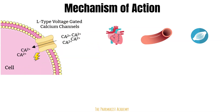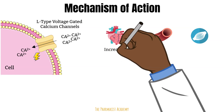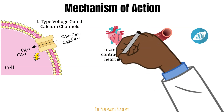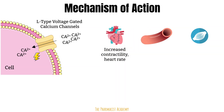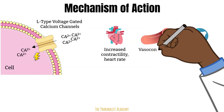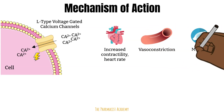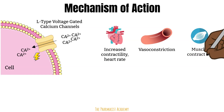The channel is normally closed, but when triggered by an action potential, it opens up and there is an influx of calcium into the cell. In the heart, calcium helps increase contractility and heart rate. In the smooth muscle of the blood vessel, it promotes vasoconstriction. And in the skeletal muscle, calcium is important for contraction.